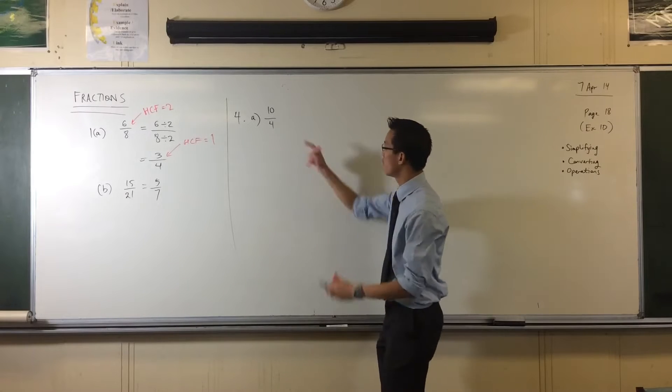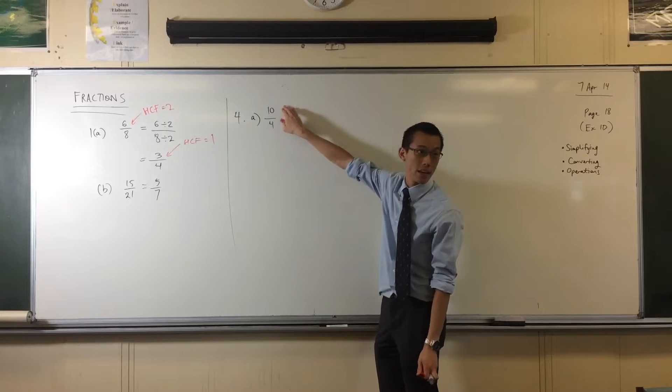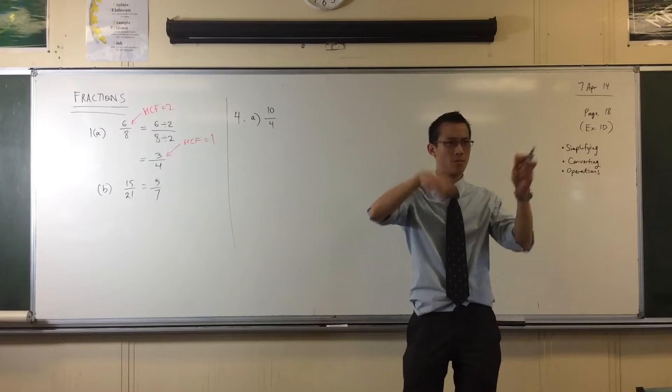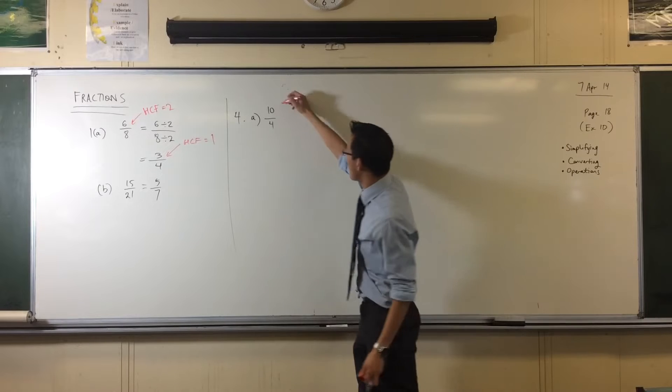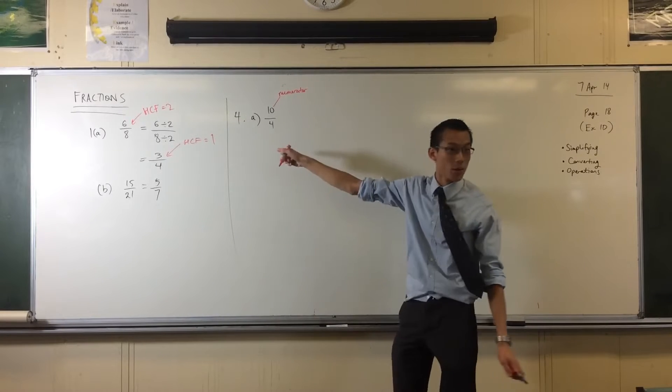So this number at the top and this number on the bottom. Usually you've got a small one here and the big one here. What are they called by the way? Rather than calling one at the top, one at the bottom. Yeah, this one's the numerator and the other one's the denominator.